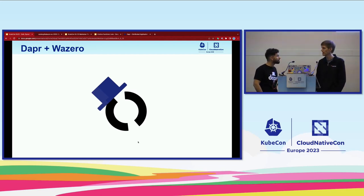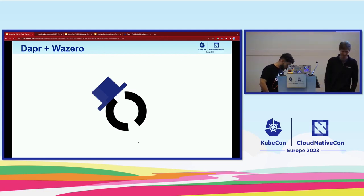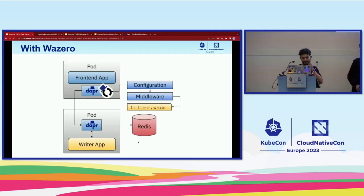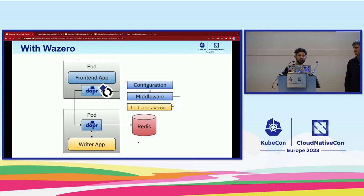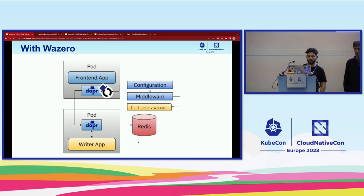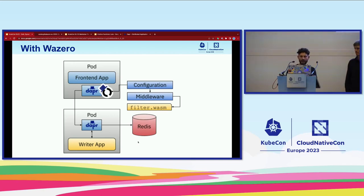Mauricio will now show exactly how it works. I'll just extend the example I was showing before — the application sending requests to the database. We want to extend it using the HTTP middleware component introduced by Long and Adrian. We're going to use the Wazero runtime already embedded into the Dapr sidecar to run that. In order to do that, we need to create the filter WASM file — an HTTP filter we'll include in our HTTP chain. For that, we need two configuration resources in Kubernetes: the middleware component and the configuration resource that wires it to the application.